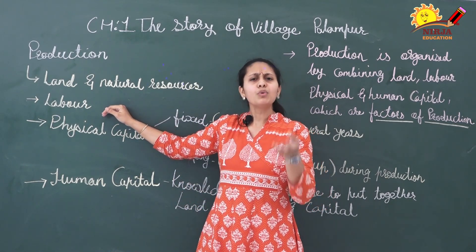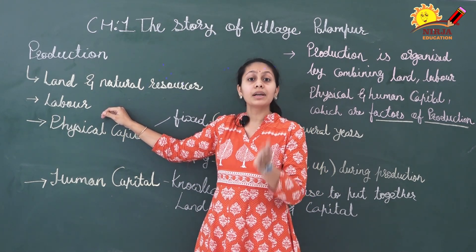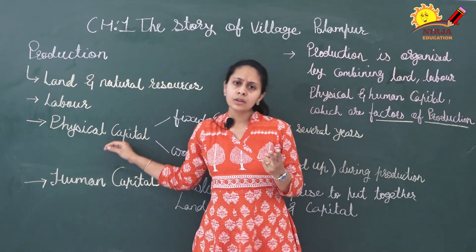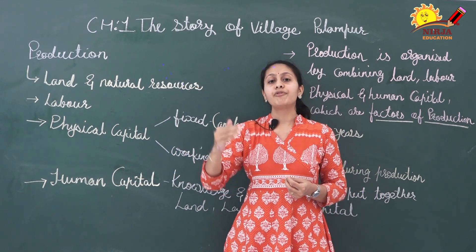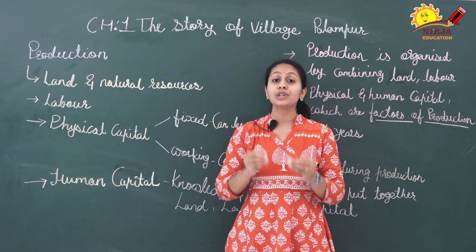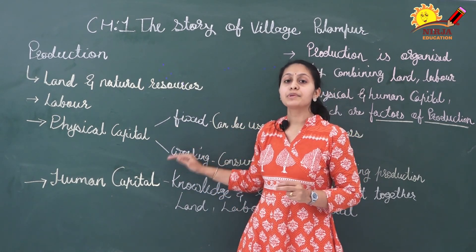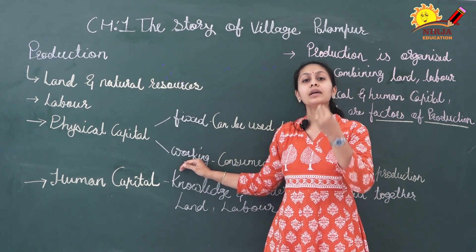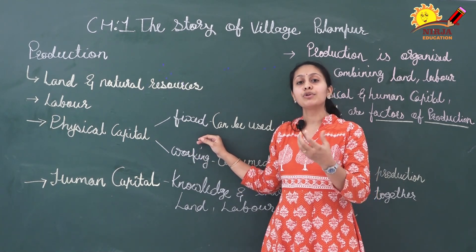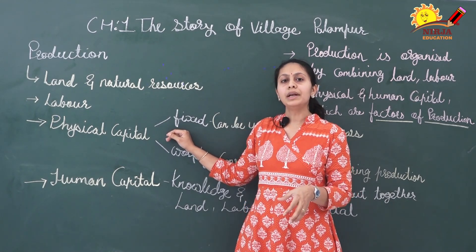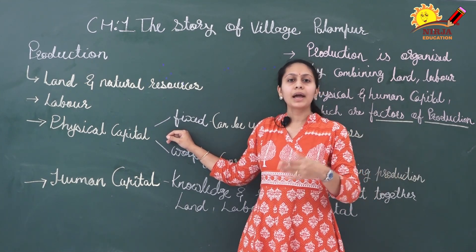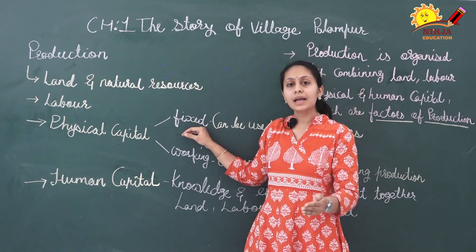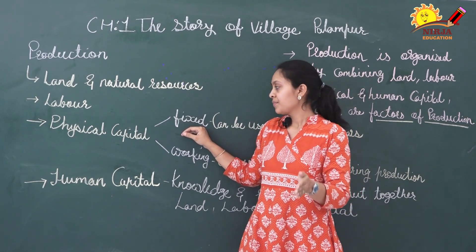Second comes labour — the people who are working on that land. Then comes physical capital, which is basically the inputs required at different stages of production. Physical capital is of two types: fixed and working. Fixed capital is that which can be used over many years — once you have established or purchased it, it can be used for many years. For example, a school building once built can be used for several years; the building does not change when your academic year changes. So a building is fixed capital — once you invest in it, it can be used for several years for the purpose of production.